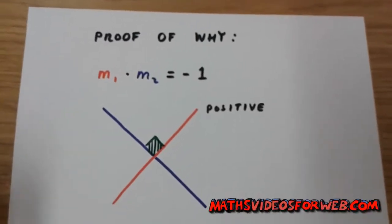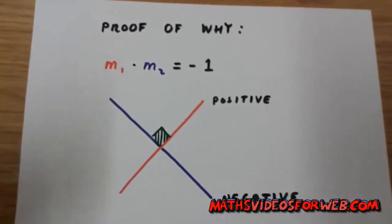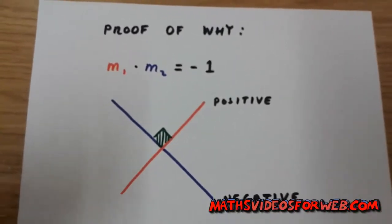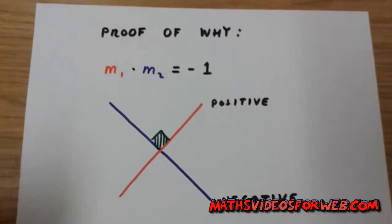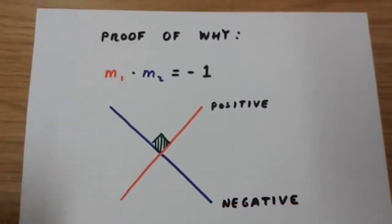In this video, I'll be showing you why the product of two perpendicular gradients is equal to minus 1.